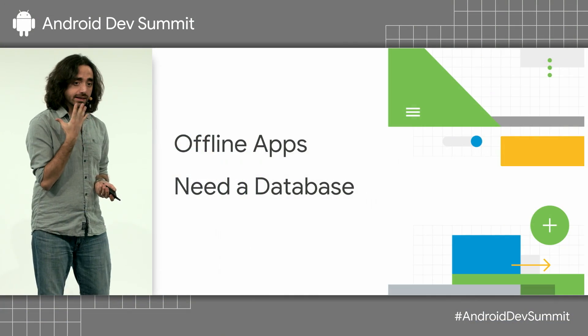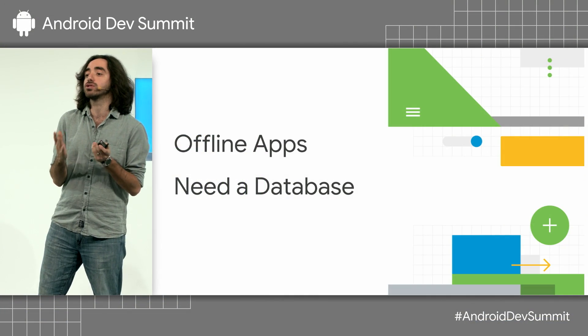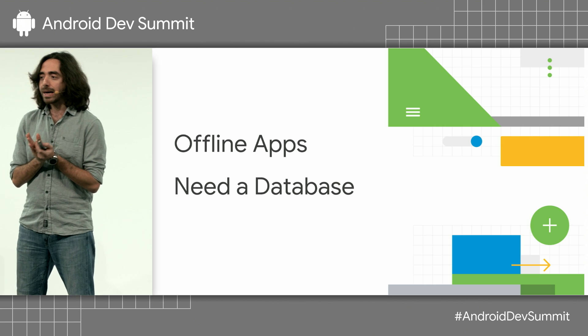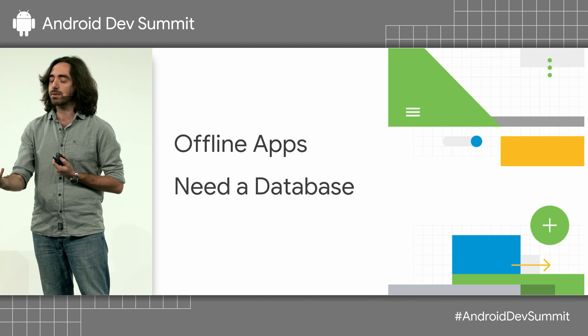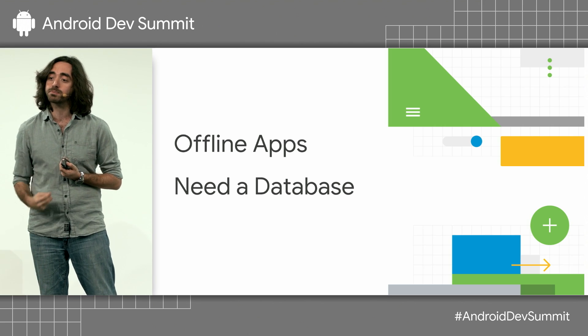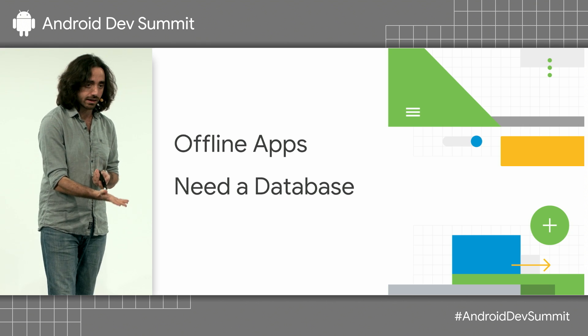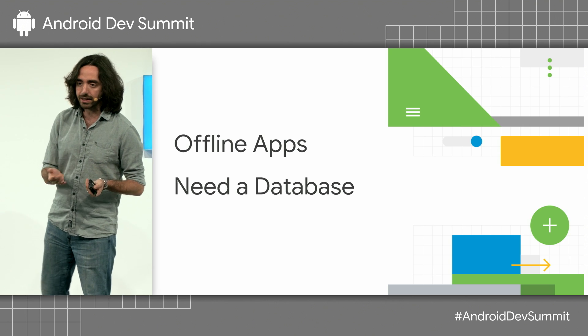Today we are going to talk about Room. We ask people to write offline-ready applications — we want your applications to work without a network connection. But if you don't have a proper model inside your application, it's pretty much impossible to write a good offline experience. So for that reason, you do need a database.